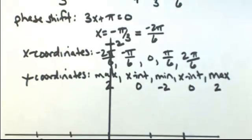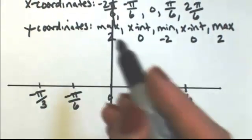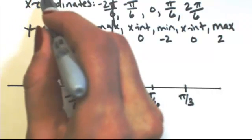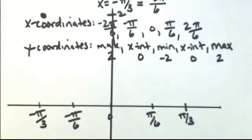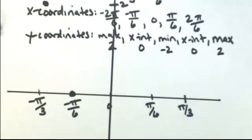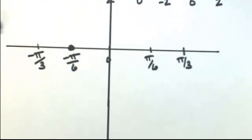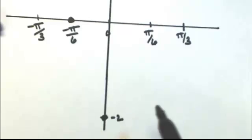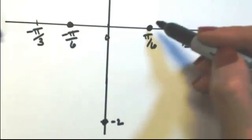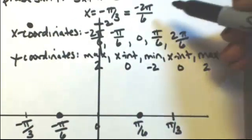So at my first x-coordinate, I'm going to have 2, and then an x-intercept, down to a min, x-intercept, and then my max.